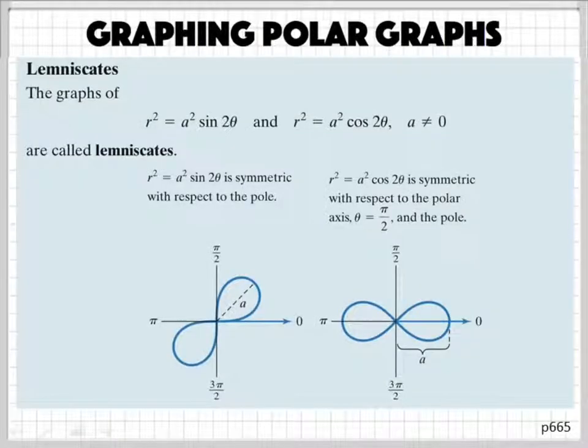So now, let's see. Let's take a look at one last type of polar graph, and it's called the lemniscates. I don't know how to say these. I'm sorry. Lemniscates. Lemniscates. I don't know. But this is the form that they take.